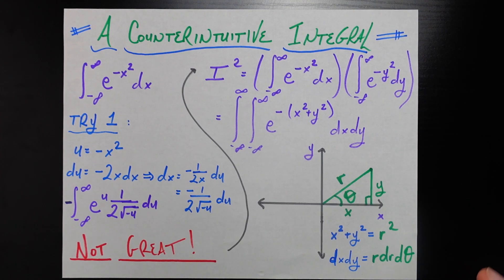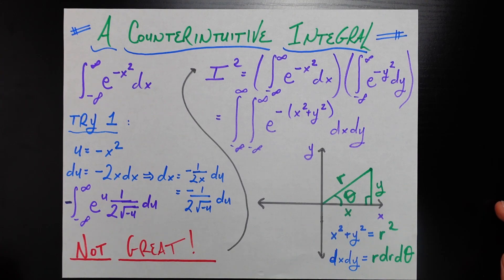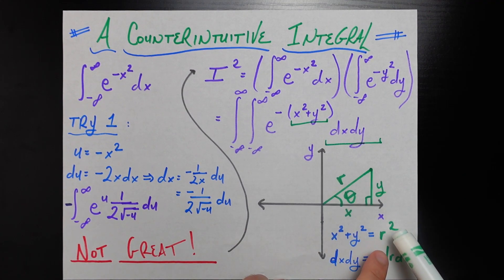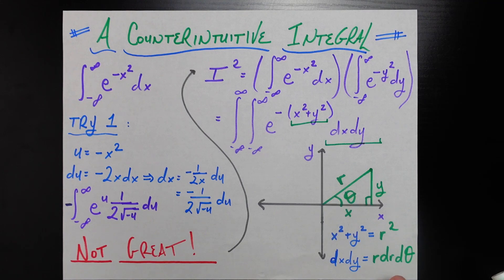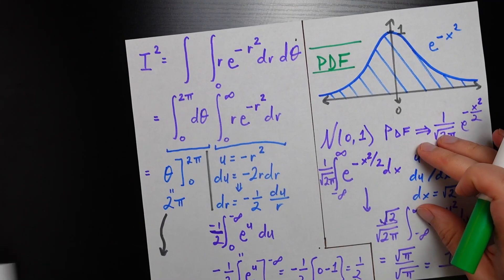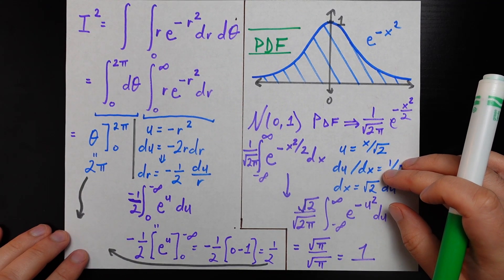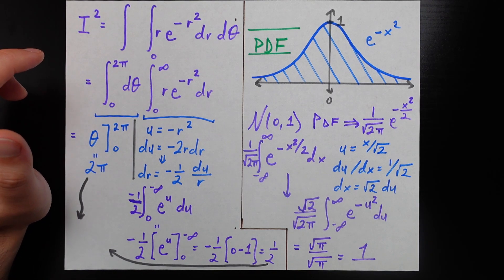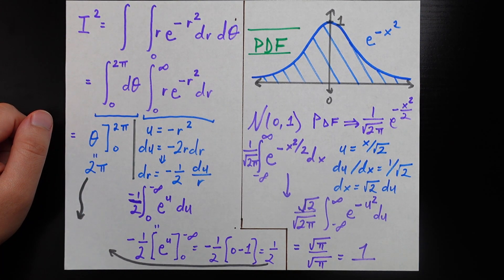By converting the language of x's and y's to R's and thetas, we have everything we need to actually take this more complex thing into a thing we can actually solve. You can start seeing that because x squared plus y squared equals R squared, that's exactly what we see here. dx dy equals R dr d theta, that's exactly what we see here. So we can substitute R squared here and R dr d theta here.